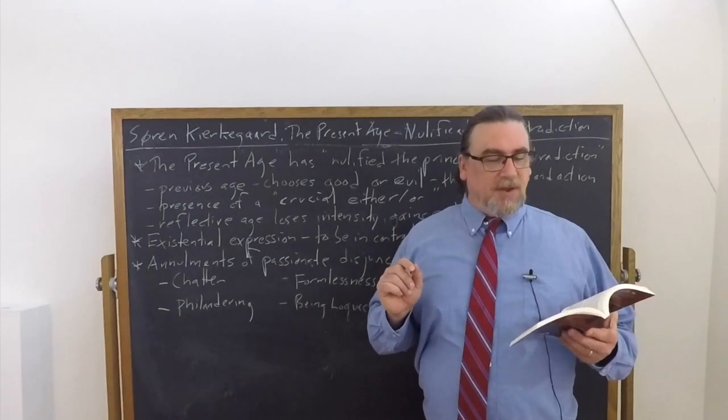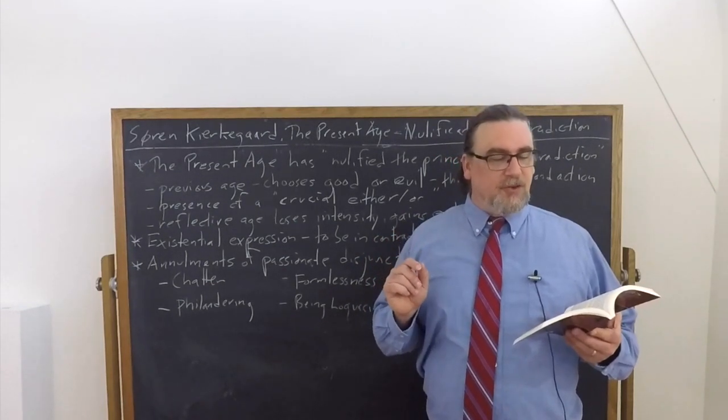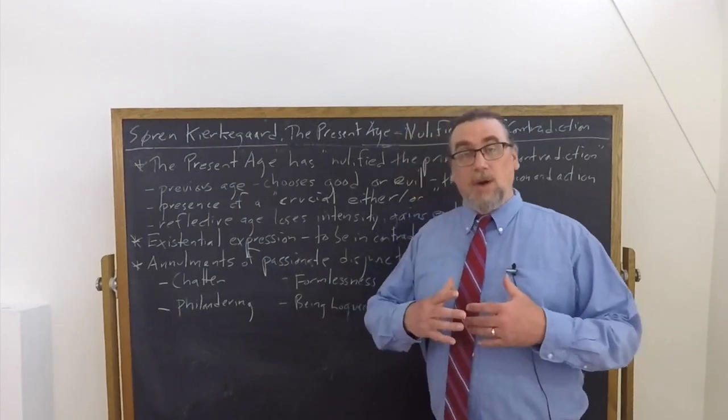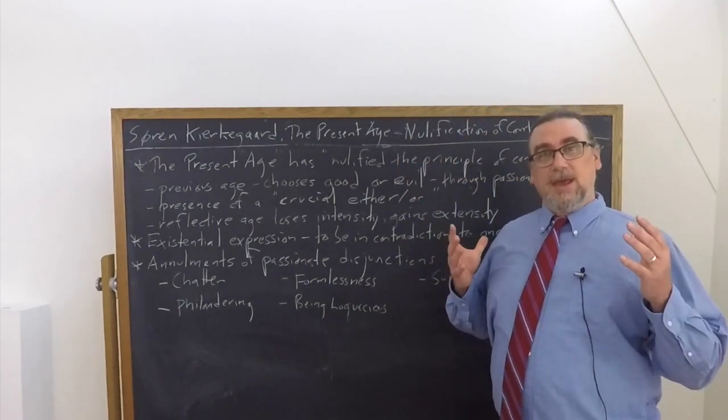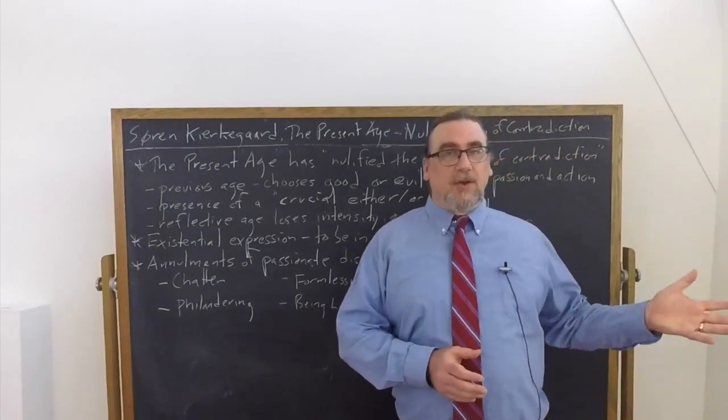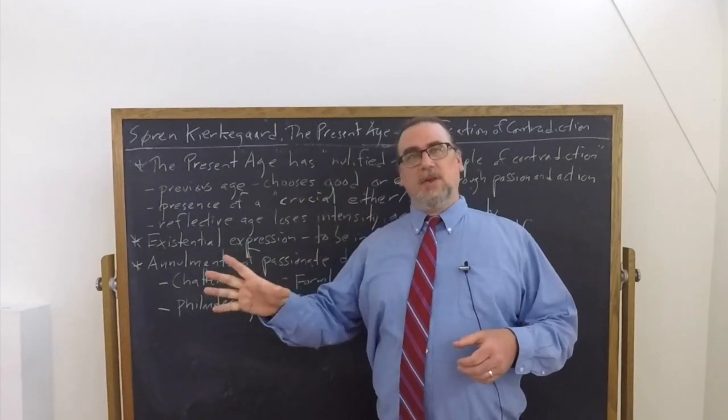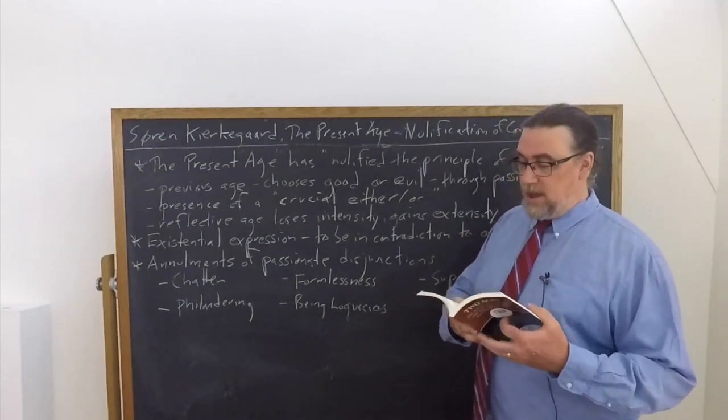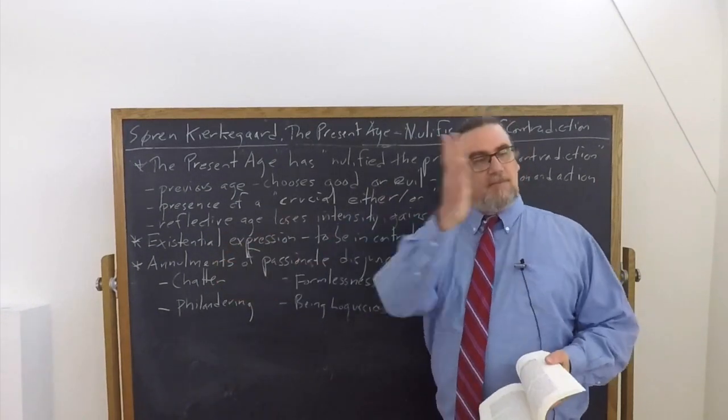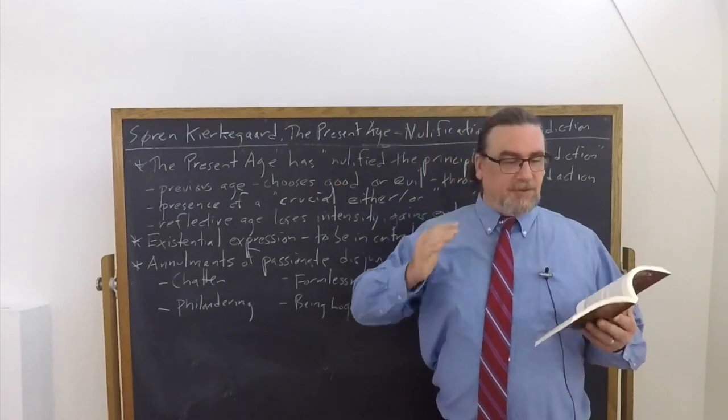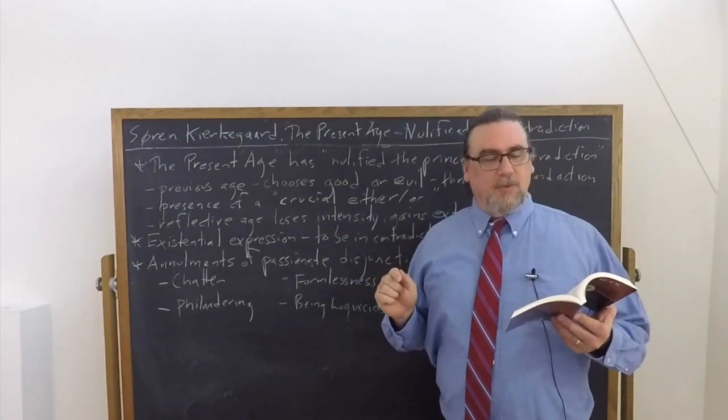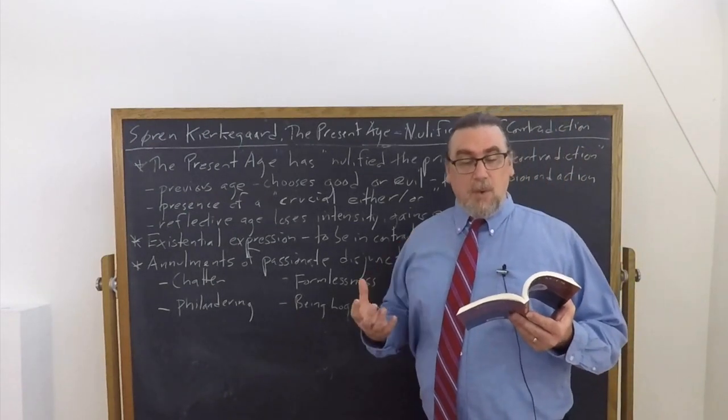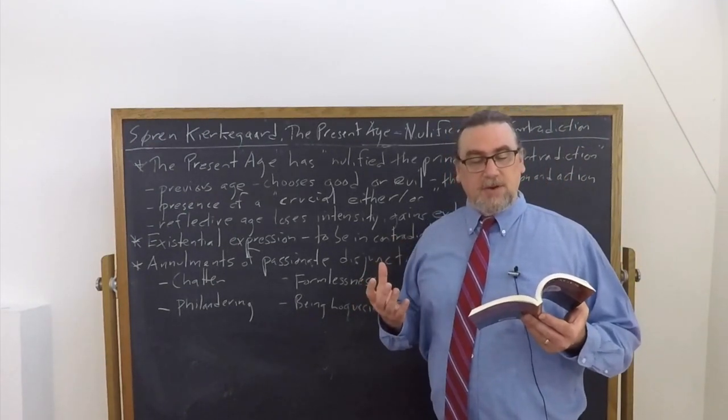So he says, the creative omnipotence implicit in the passion of absolute disjunction that leads the individual resolutely to make up his mind. So this is what the previous age allowed, or what could be possible for the single individual in the present age within the realm of what Kierkegaard calls the ethical, and within the realm of what he calls the religious by taking the leap. That is the person who actually can have this passion of absolute disjunction. I'm going to do this. I'm not going to do this. I'm choosing this. I'm choosing against this. He says, this is transformed by the extensity of prudence and reflection.